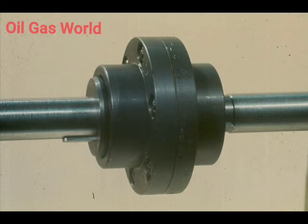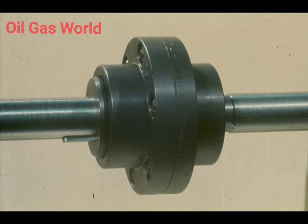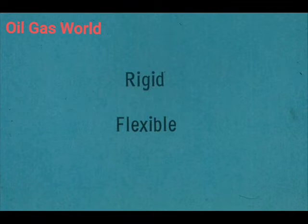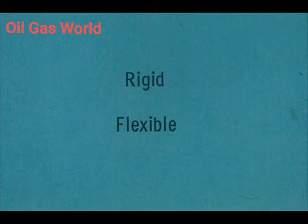The coupling design will determine whether or not lubrication is required for operation. If the coupling has metal parts that will rub against each other, causing friction, then lubrication will be required. We mentioned a moment ago that we would deal with two basic classes of couplings, the rigid and the flexible. Needless to say, there is a tremendously wide variety of types in each of these classes.